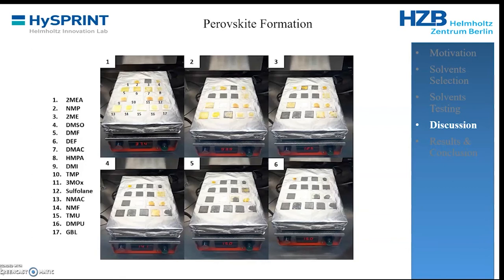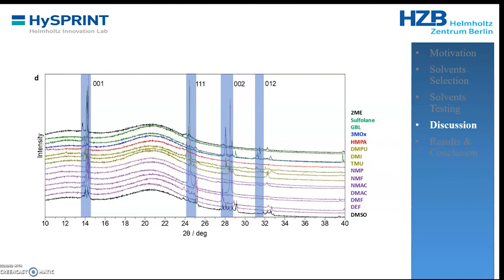To quickly assess whether precursor solutions form perovskite, we performed drop casting onto glass substrates and applied a thermal ramp of 12°C per minute between 30 and 150°C, then held at 150°C for a total experiment time of 20 minutes. Most precursor solutions formed perovskite, except two — from 2-methoxyethanolamine and trimethyl phosphate (numbers 1 and 10). XRD was performed to confirm the formed material is perovskite with the correct phases of formamidinium tin iodide, though small differences between solutions were noted for future study.